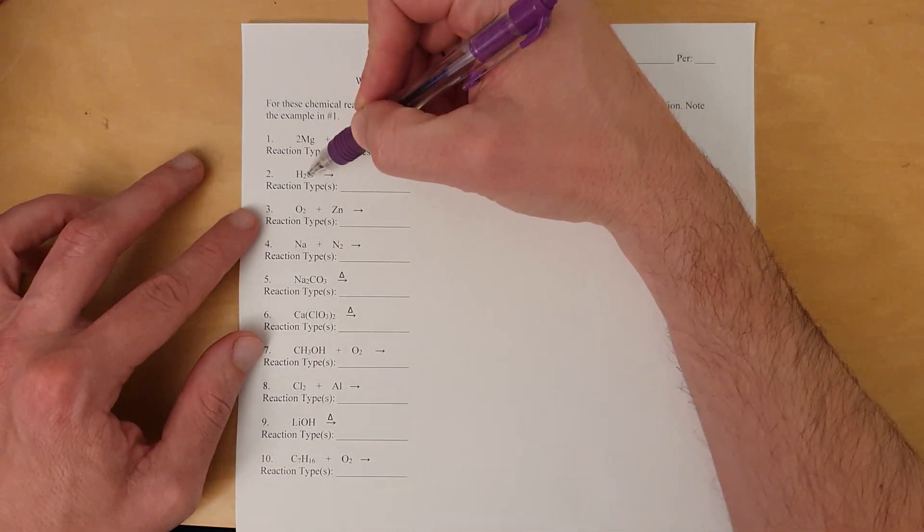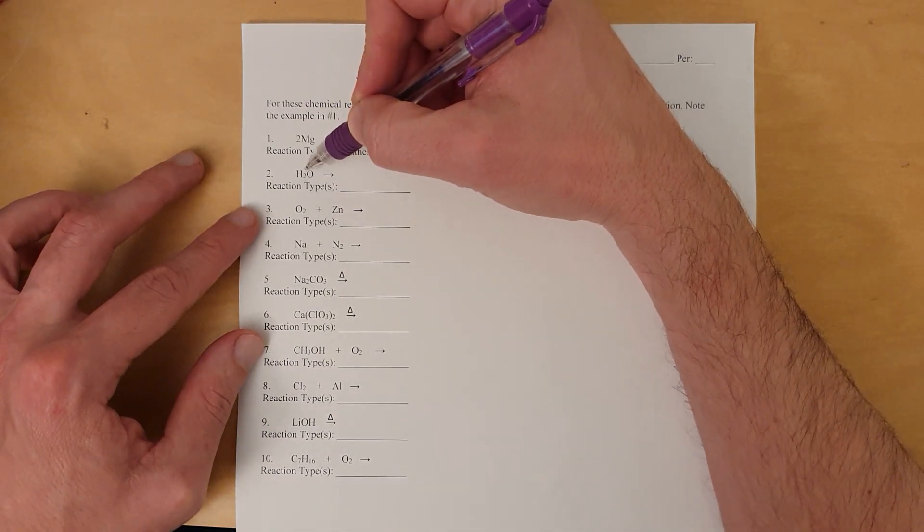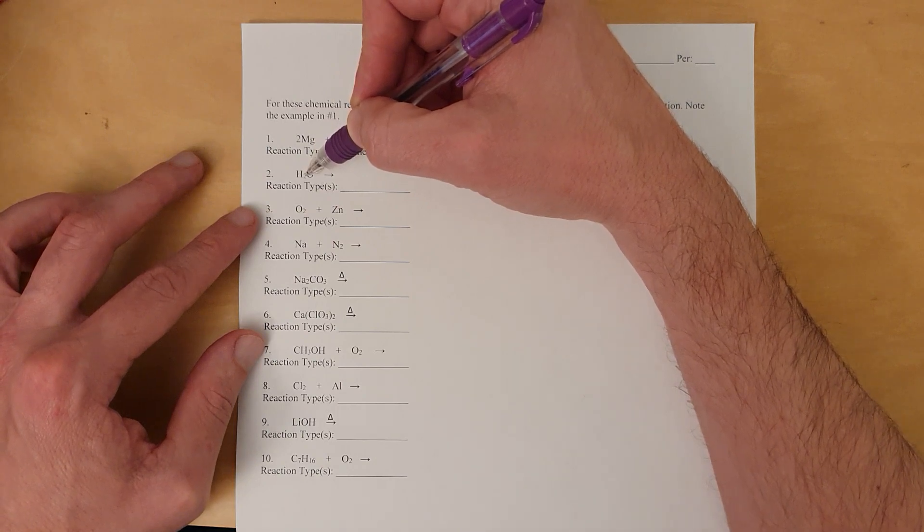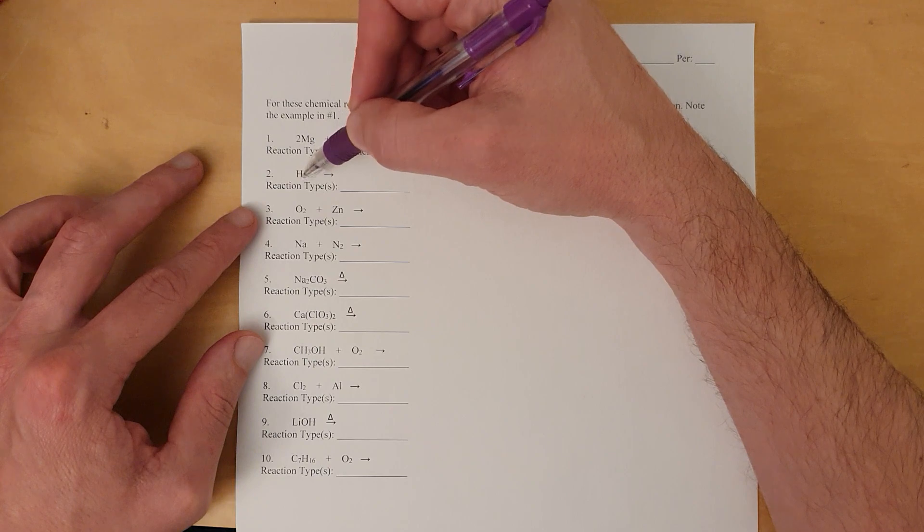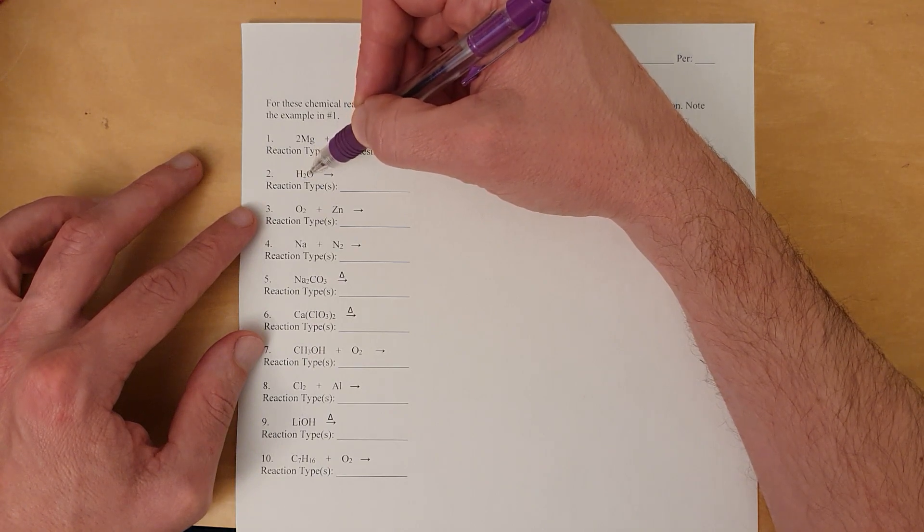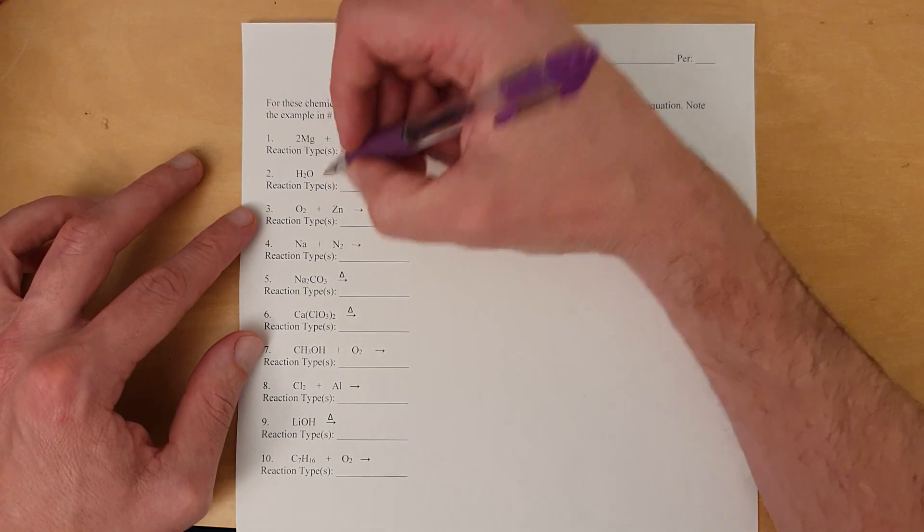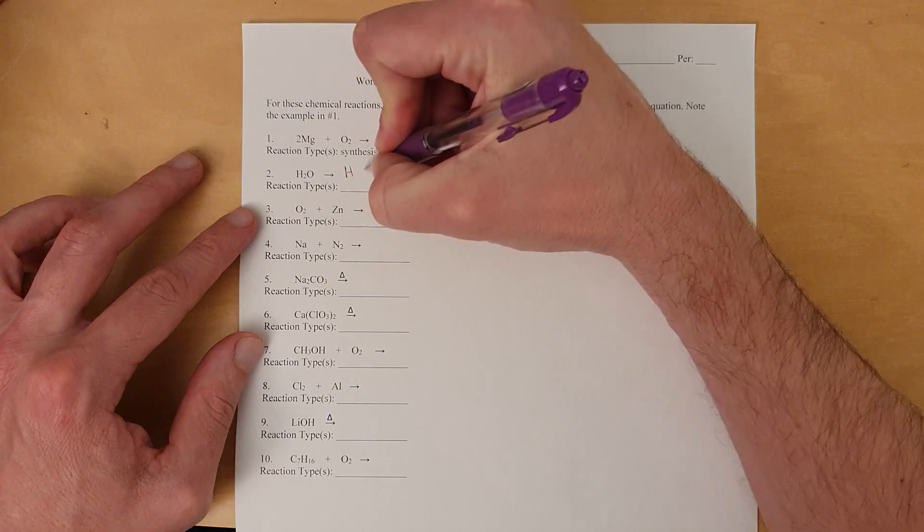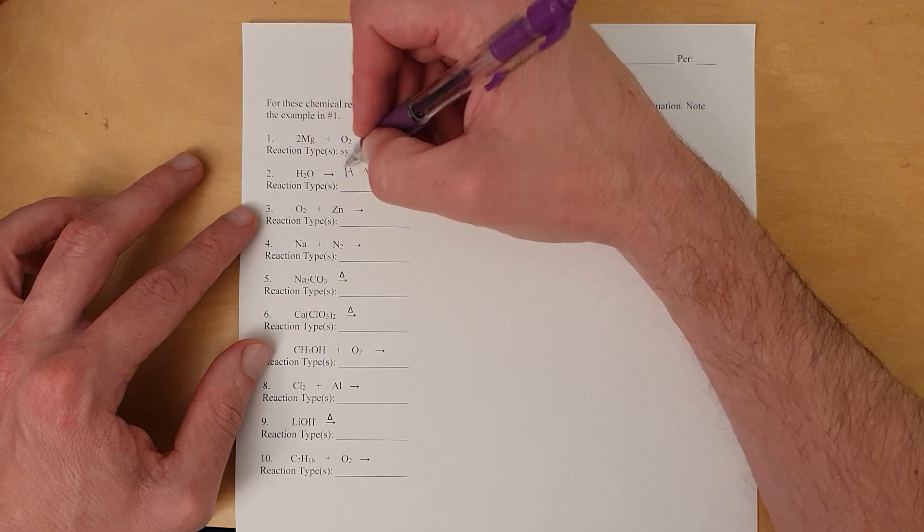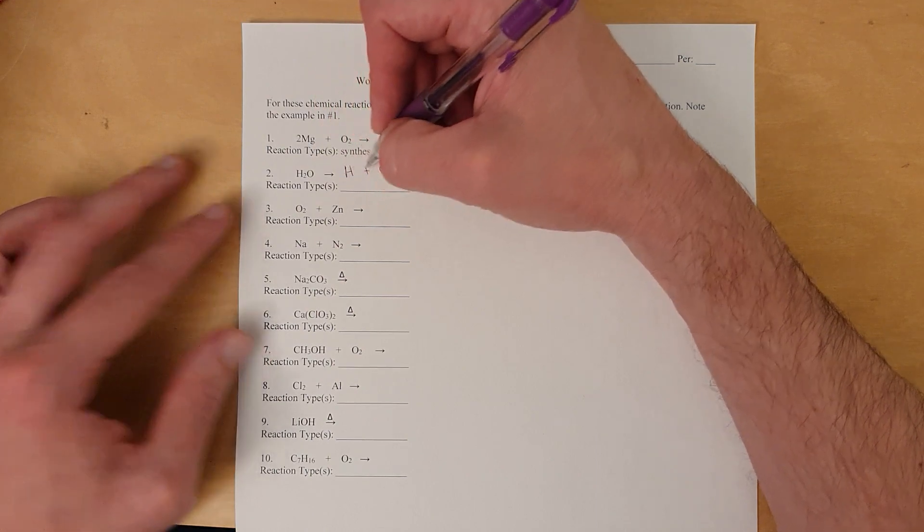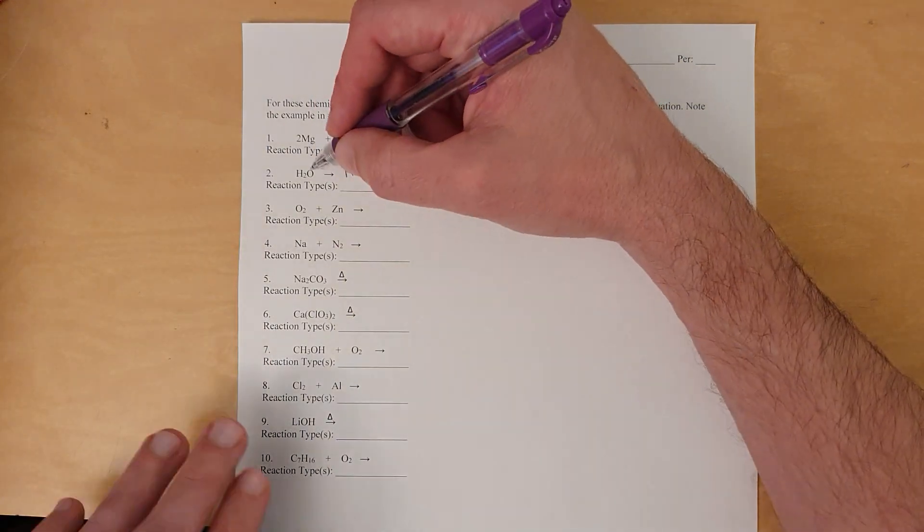Right, so reaction type, you see just one reactant, that means it's decomposition. And decomposition is going to see a compound turn into the elements that it's made out of. So if you see hydrogen and oxygen, that means your products are hydrogen and oxygen.